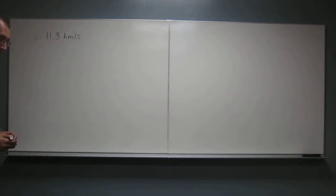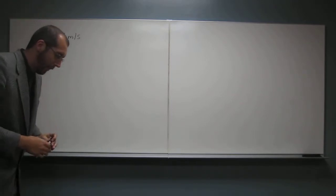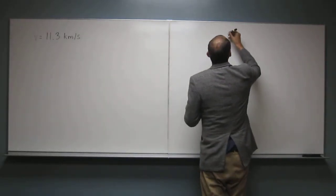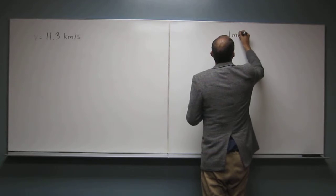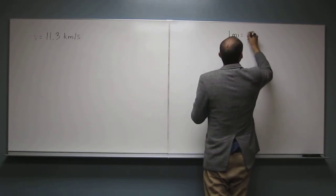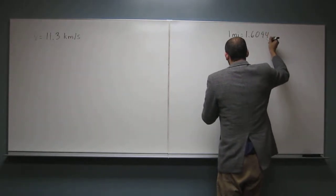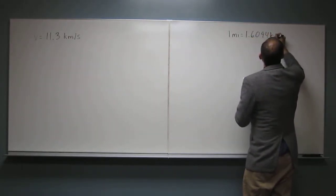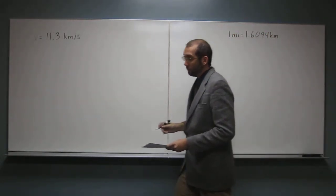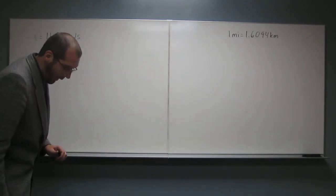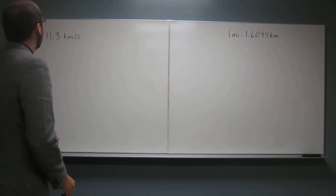Okay, well this one only gives us the conversion factor from miles to kilometers. One mile equals 1.6094 kilometers, it says, and it wants us to get to miles per hour. Well, how are we going to do that if we don't have a conversion factor from seconds to hours?